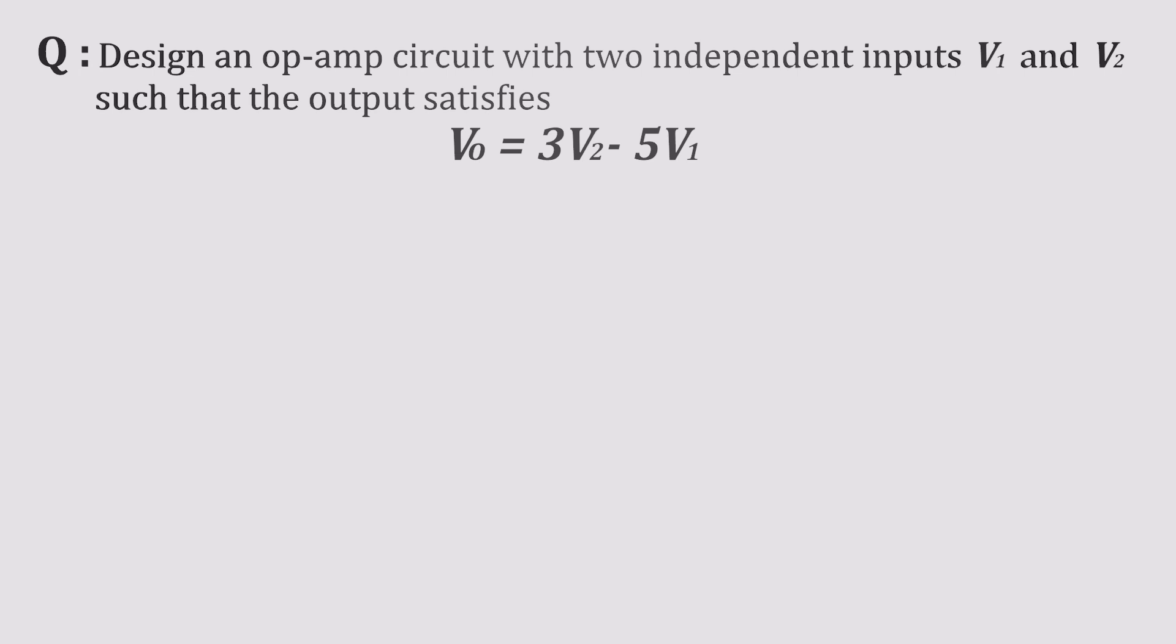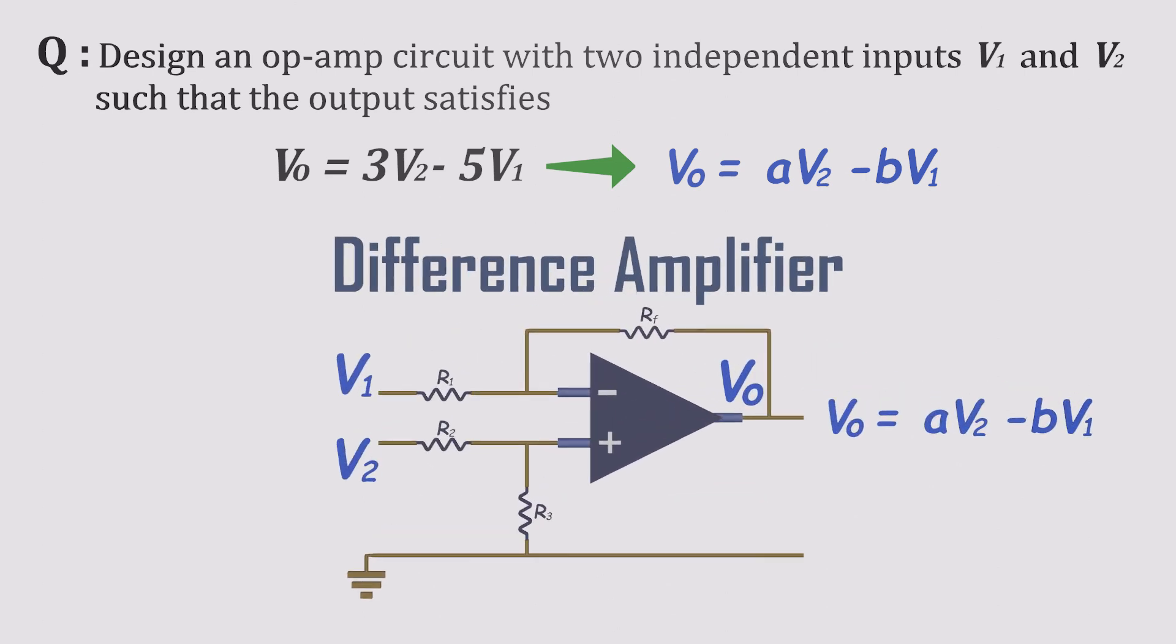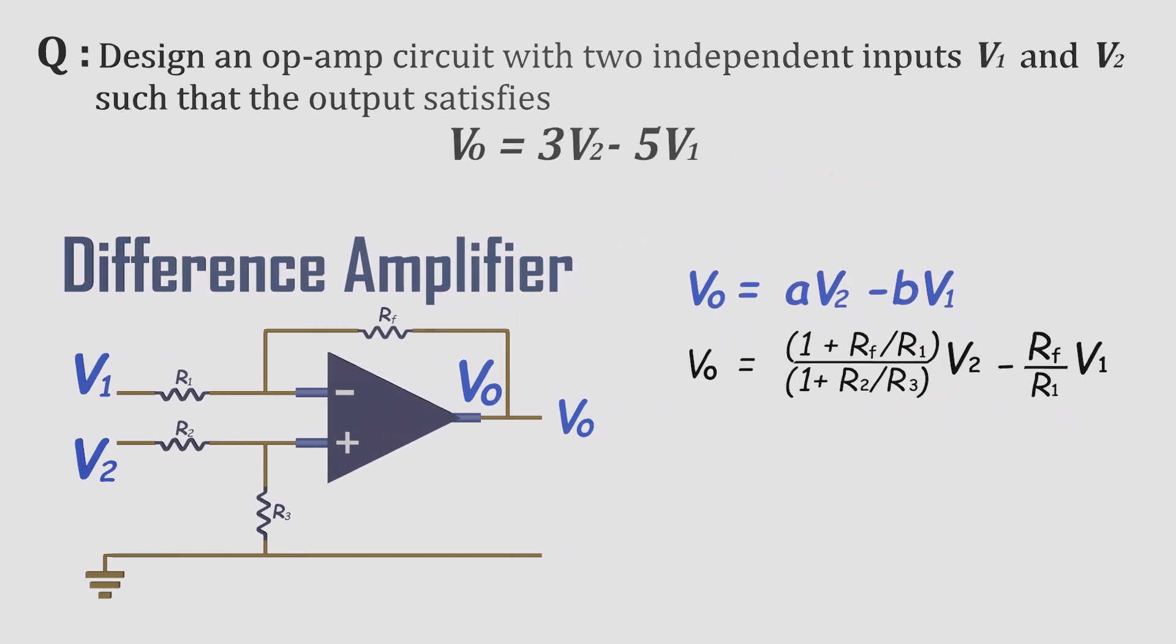We're asked to design an op-amp circuit whose output is a weighted difference. VO equals 3 times V2 minus 5 times V1. That screams difference amplifier. If you've met the difference or subtractor amplifier before, you might remember its output looks like a longer expression with resistor ratios all over it. The nice part is we can choose those resistor values so the math collapses to the exact constants we want.